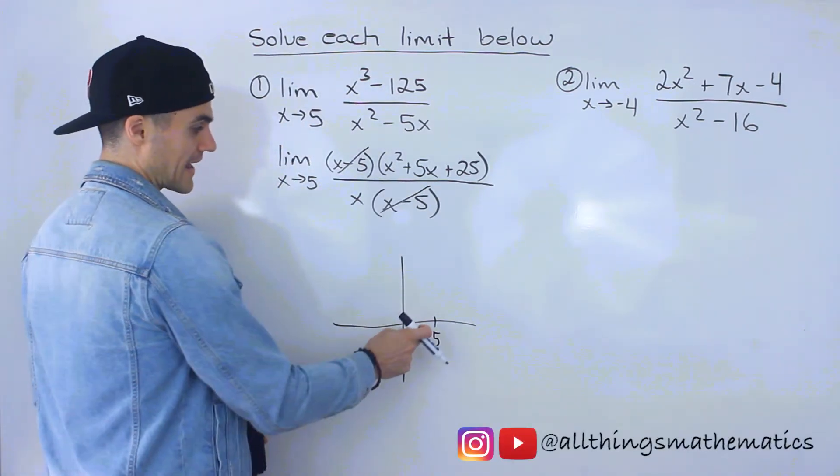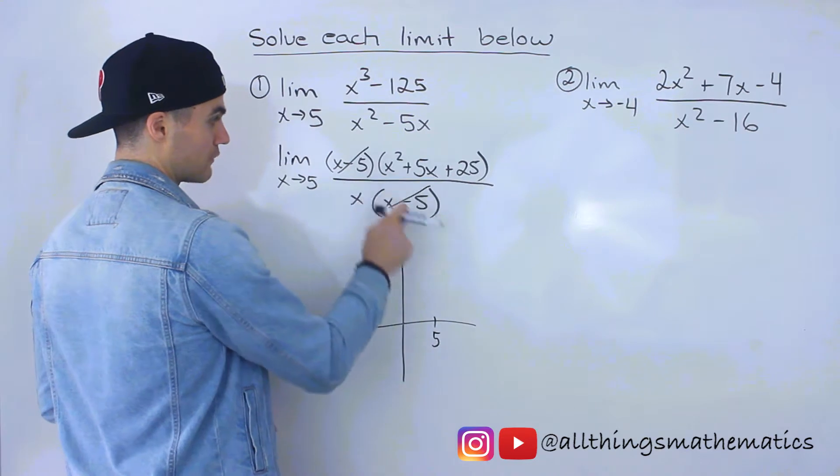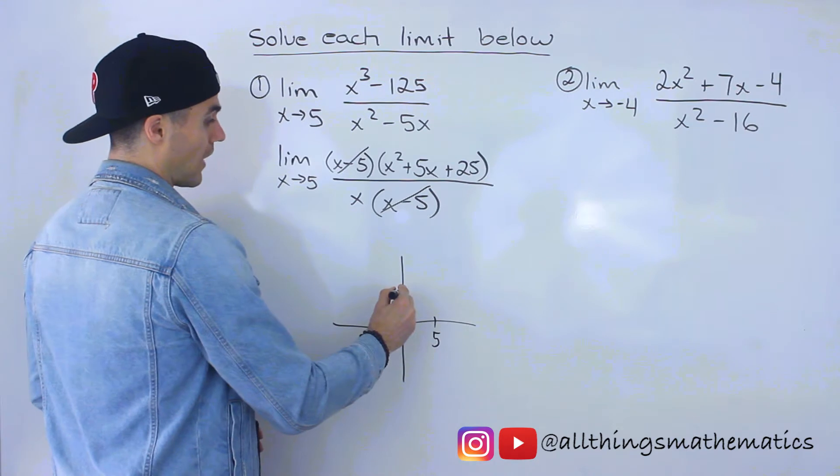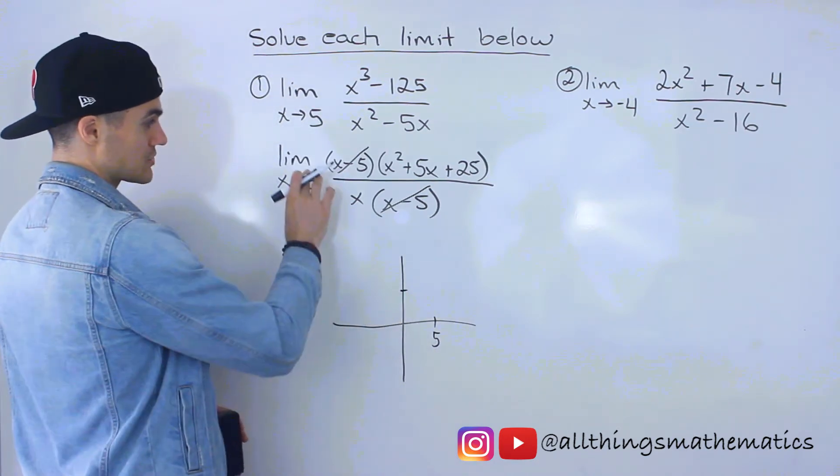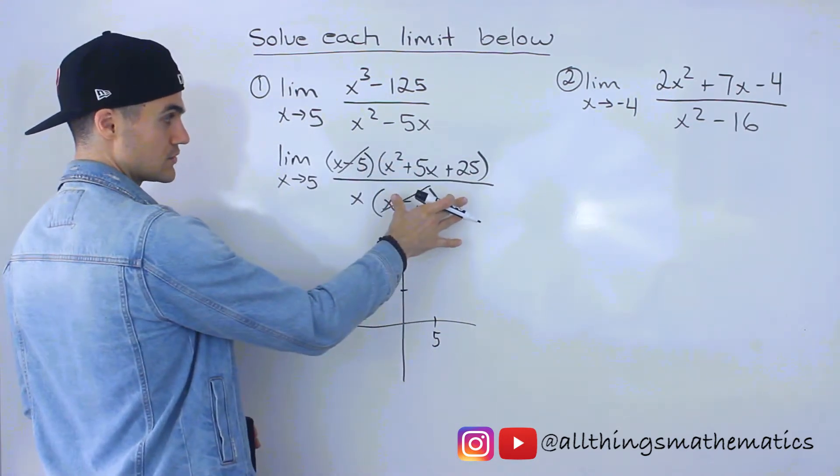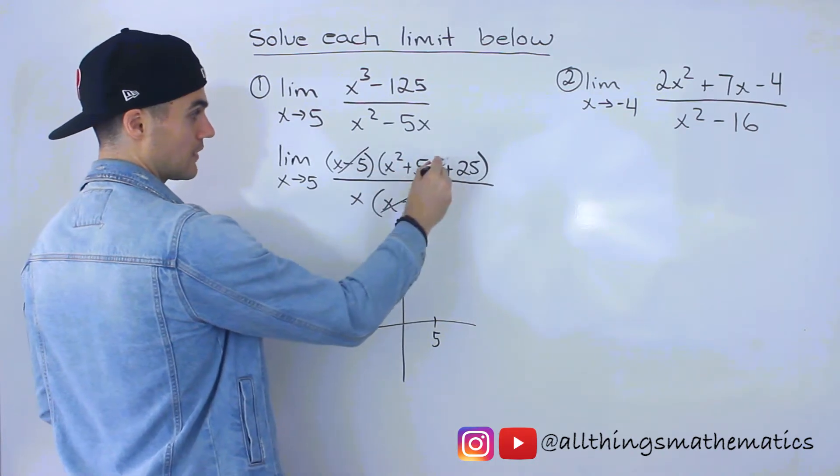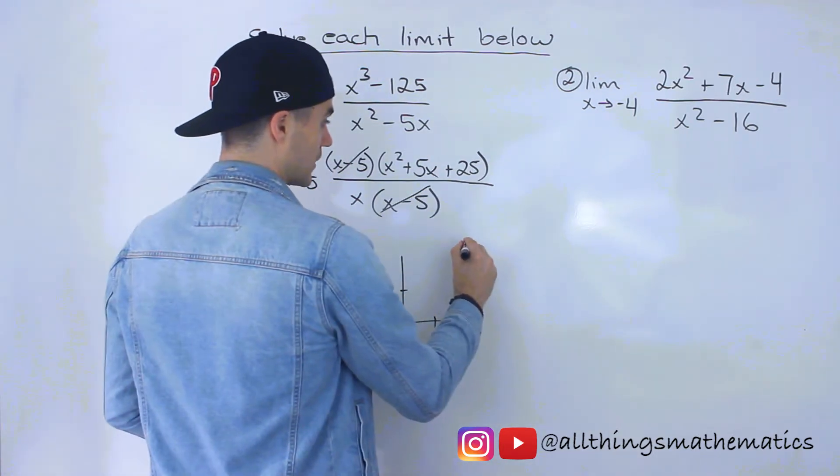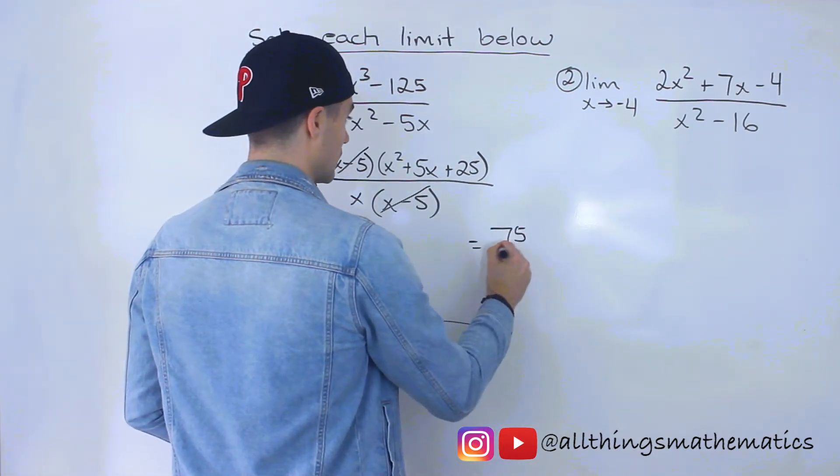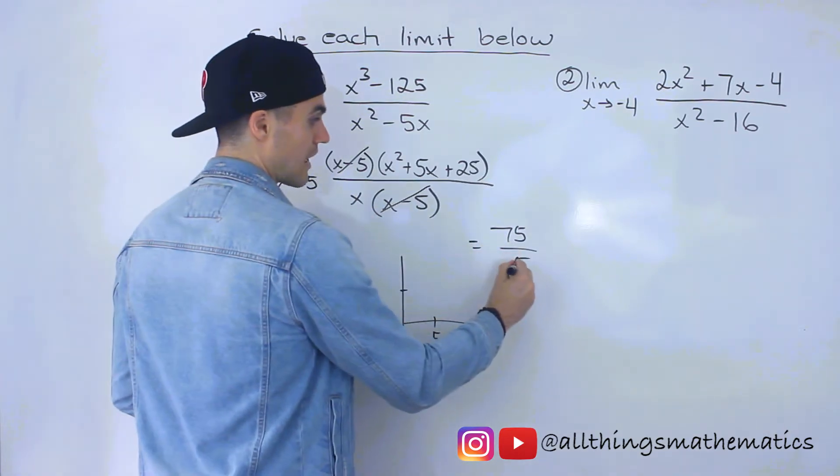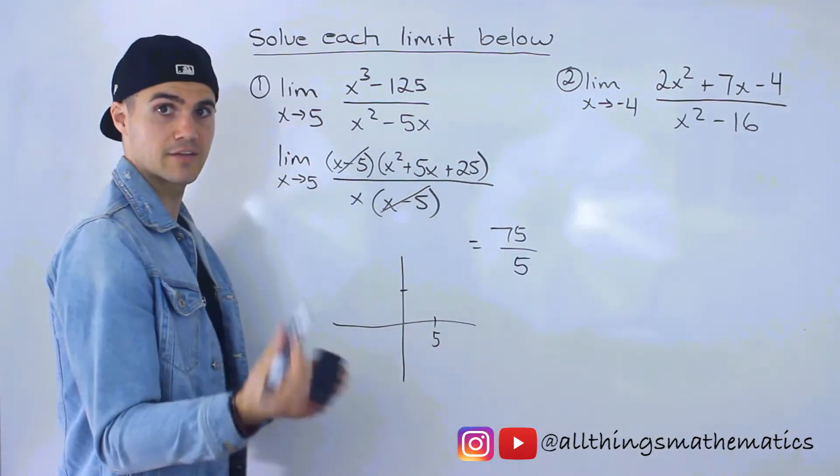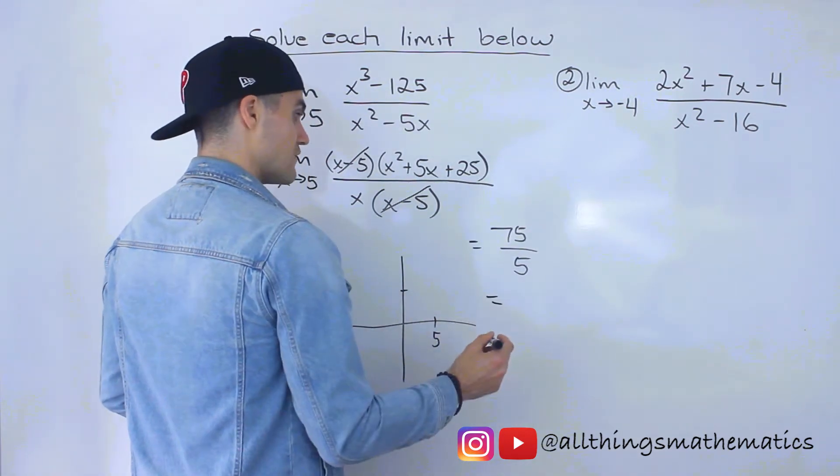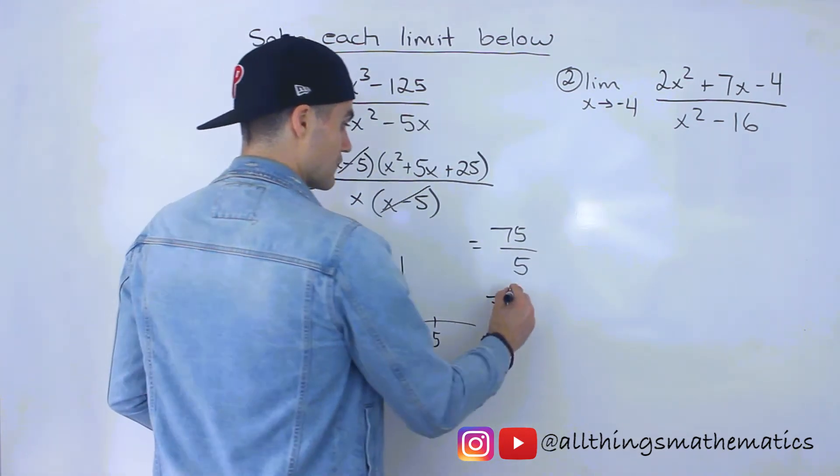But what I do know is that at an x value of 5, there's going to be a hole when a factor cancels out like that. And so we can figure out what the y value is at that hole by now just plugging in 5 into the remaining function. So if we plug in 5 here, we'd have 5 squared plus 5 times 5. So that's 50 plus 25. That would give us 75 over this x value. We could plug in 5 there. And notice now the denominator does not equal 0. So 75 divided by 5 gives us 15.